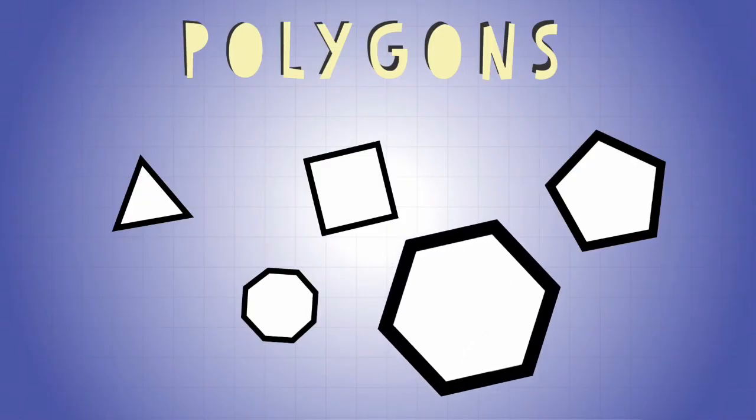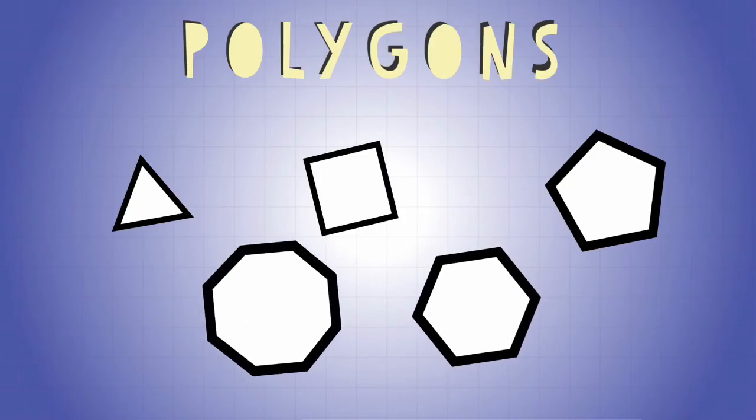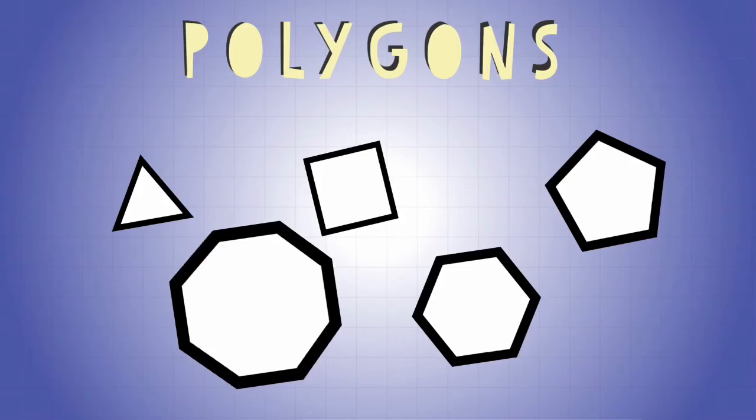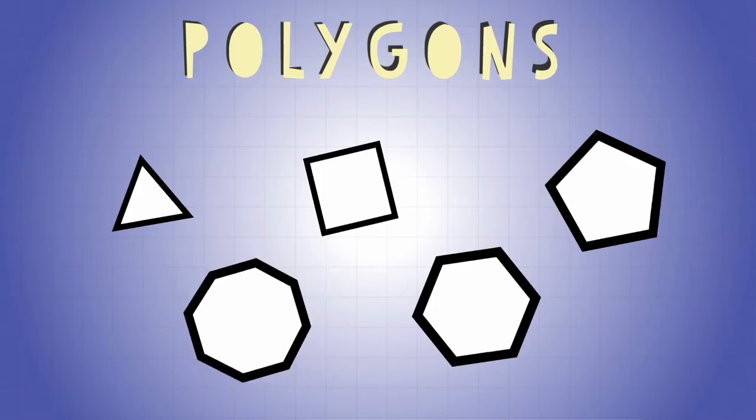Then we have the hexagon. The hexagon is a six-sided figure that's composed of obviously six line segments. And then the octagon. Octagon, oct means eight, so this is an eight-sided figure.